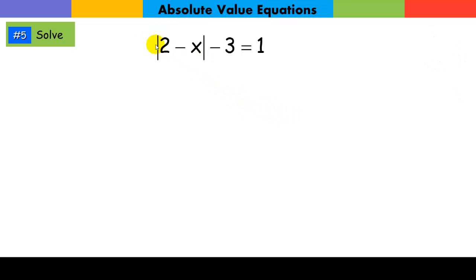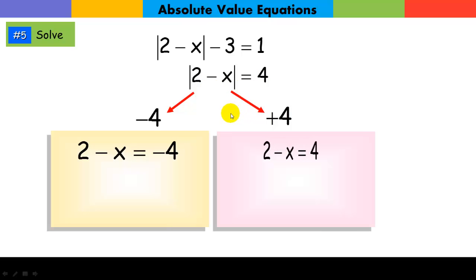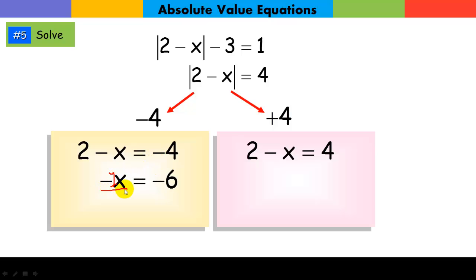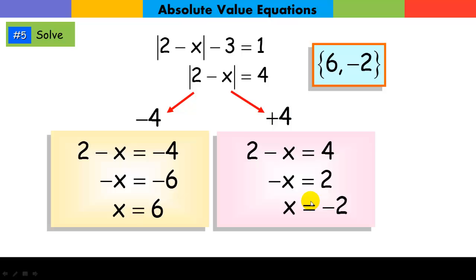As in the previous problem, we want to get the absolute value expression alone. Here we have: absolute value of 2 minus x, minus 3, equals 1. Add 3 to both sides to isolate the absolute value expression — now the absolute value of 2 minus x equals 4. Set the expression equal to both 4 and negative 4 and solve. Subtracting 2 from both sides then dividing by negative 1 gives x equals positive 6. Doing the same for the negative case gives x equals negative 2. The solution set is 6 and negative 2.